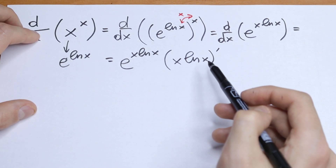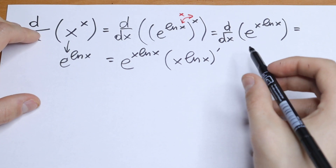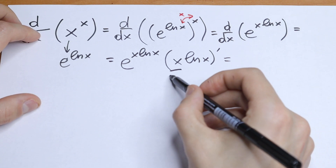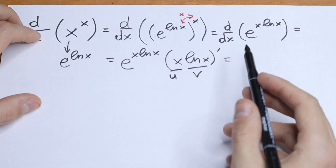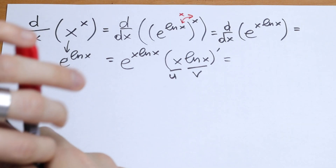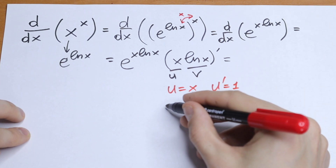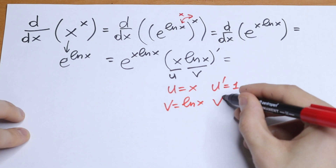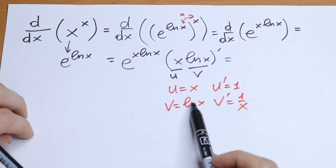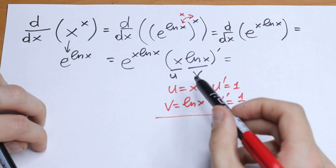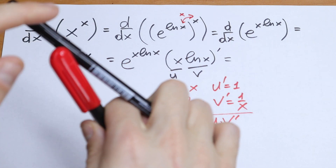We need to find the derivative of this exponent using the uv product rule method. Let u equal x and v equal natural log x, so u prime equals 1, and v prime equals 1 over x. The formula is u prime·v plus u·v prime.